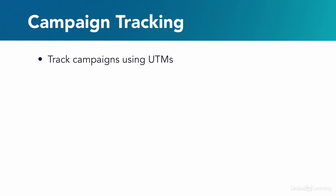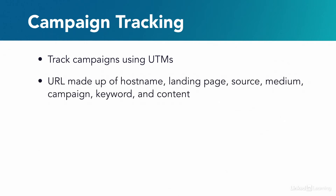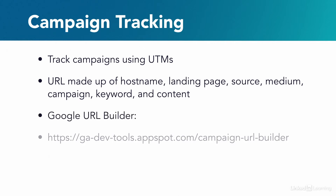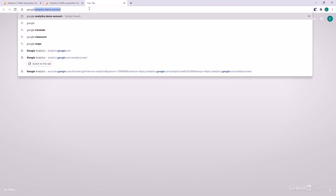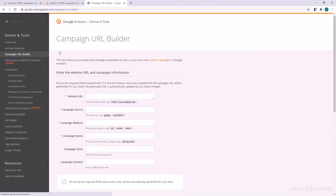We're going to track these campaigns using what we call UTM parameters. It's a regular URL and we just add some extra information — these UTM parameters — into that URL. Google has a special tool to help us do this and make sure the formatting is right. We can head over to Google and type in "Google Analytics URL Builder" and it'll take us right there.